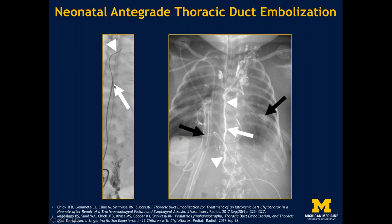In a case example of a neonate with congenital diaphragmatic hernia repair and known thoracic duct injury with high-output chylothorax, weighing about five pounds, we injected one cc of lipiodol into the inguinal lymph nodes, accessed a lymphatic channel in the upper abdomen with a 21-gauge micropuncture needle, passed a transcend wire up into the thoracic duct, and successfully advanced a 2.4 French prograde microcatheter. Coils and glue were placed within the thoracic duct with resolution of the chyle leak.